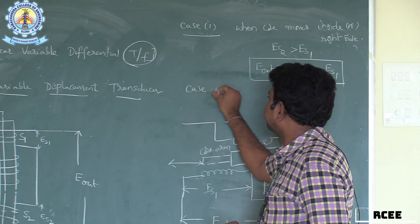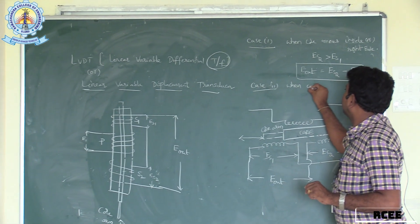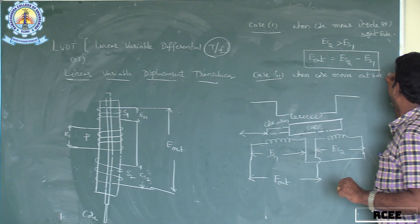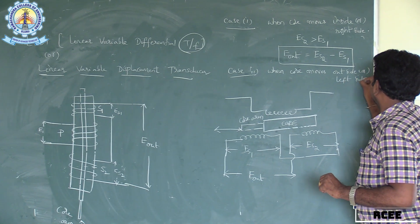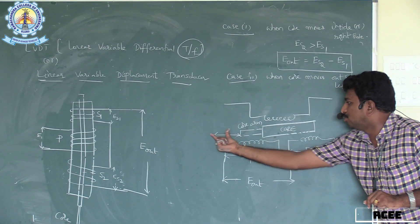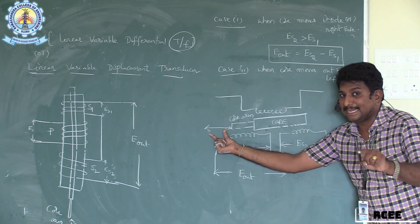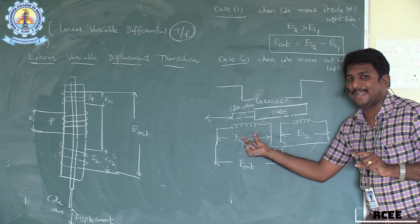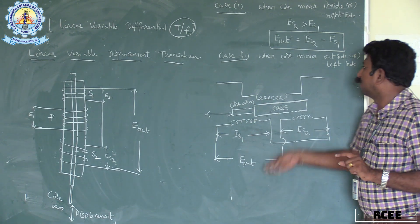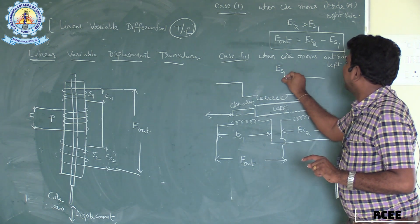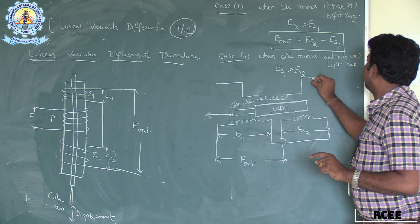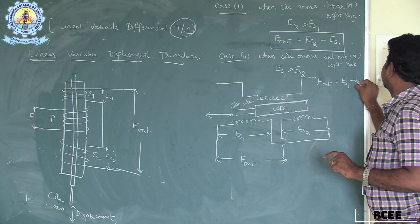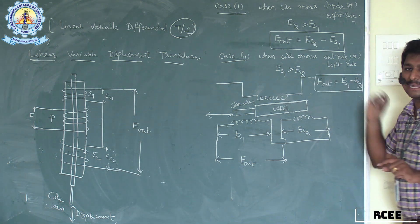Case 2: when the core moves outside (left side), the flux linkages between the primary winding and the first secondary winding S1 increase. Therefore, ES1 is greater than ES2, and the output voltage Eout = ES1 − ES2.